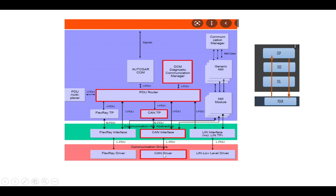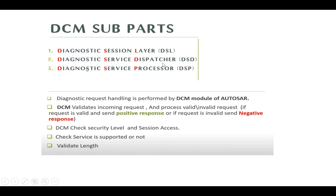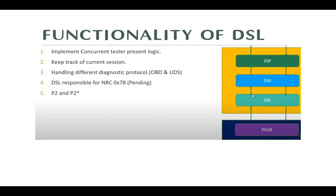The DCM model plays a major role here. The DCM model is divided into three parts mainly: DSL, DSD, and DSP — Diagnostic Session Layer, Diagnostic Service Dispatcher, and Diagnostic Service Processor. The DCM model validates incoming requests and processes them. If it is a valid request, it sends a positive response; if invalid, a negative response. DCM also takes care of security level, session access, checks whether the service is supported, and validates the length and format.